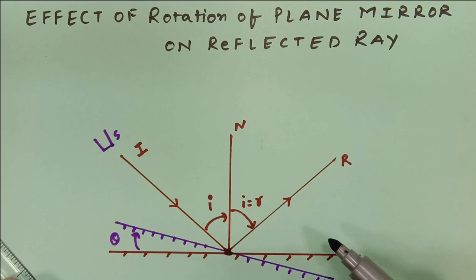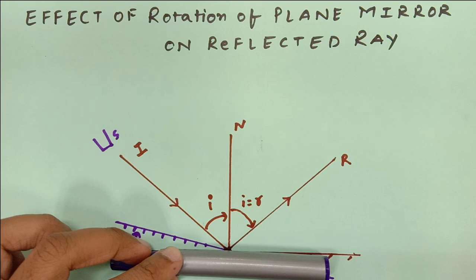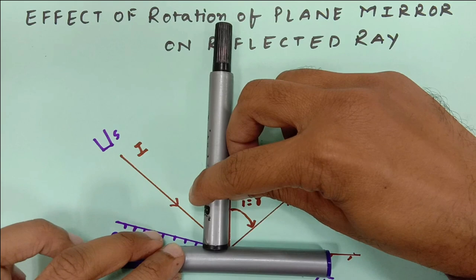The normal always stays perpendicular to the mirror. So since I have changed the direction of the mirror, the perpendicular will also change — this was the mirror and this was the perpendicular.